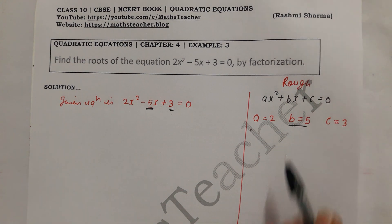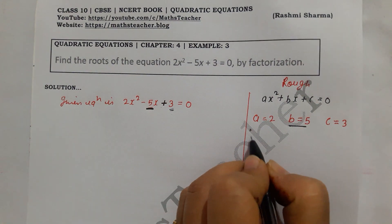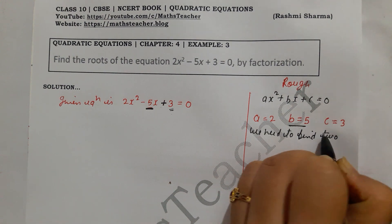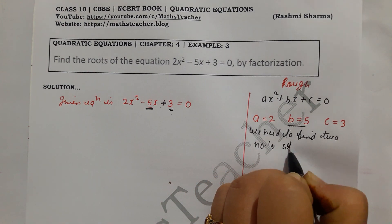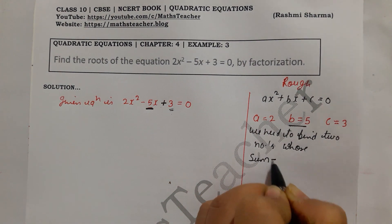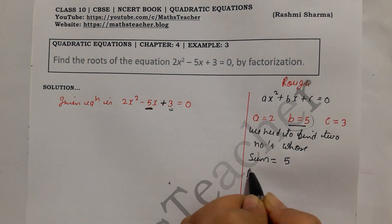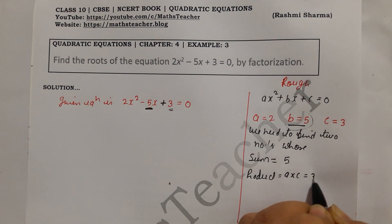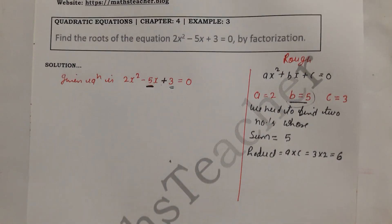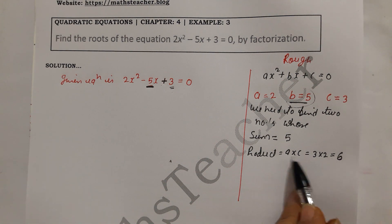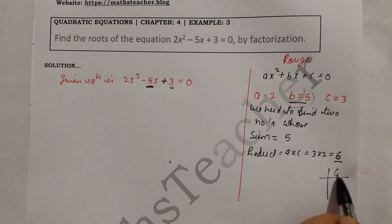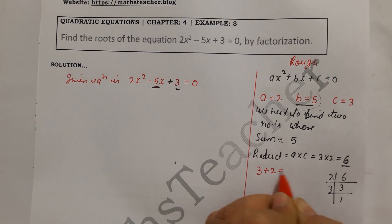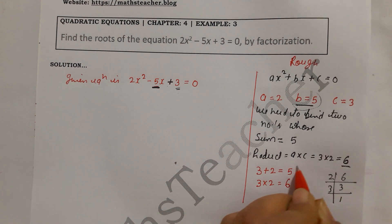We need to find two numbers whose sum equals b, that is 5, and whose product equals a times c, that is 3 times 2 equals 6. To find those numbers, make factors of 6. The factors are 3 and 2. Check: 3 plus 2 is 5 and 3 times 2 is 6. So our two numbers are 3 and 2.